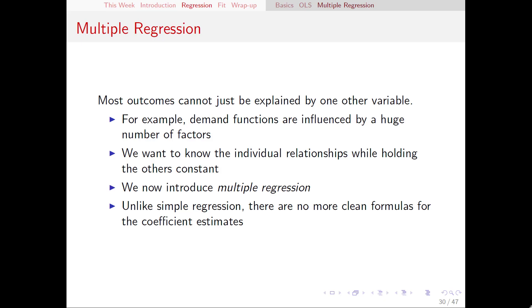A convenient feature of OLS is that we can add variables to our models relatively easily, and the technique of minimizing the RSS remains basically the same. Why expand our models? Most outcomes in economics are complicated and involve many factors — we don't actually think price is the only factor determining how much of something people buy. When we add more variables, we move from simple regression into multiple regression. Multiple regression allows us to examine relationships between our outcome and many different explanatory variables while holding the others constant. In simple regression we had clean closed-form formulas; in multiple regression we can't really do that anymore, so we let Excel handle it.